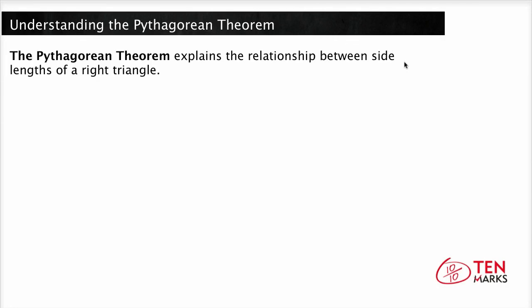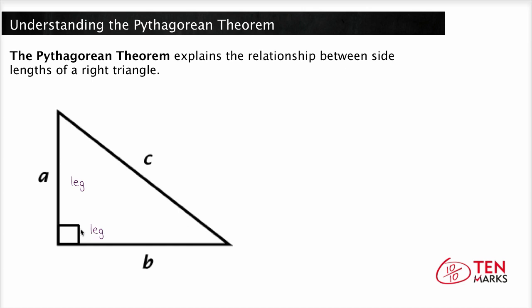The Pythagorean Theorem explains the relationship between the side lengths of a right triangle. In a right triangle, the two sides adjacent to the right angle are called the legs, and the side opposite the right angle is called the hypotenuse. This is the longest side.